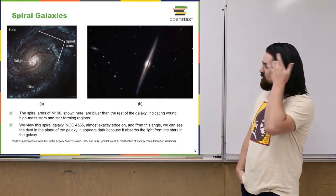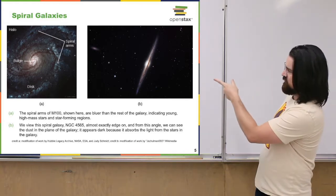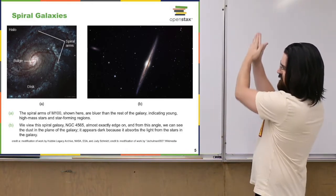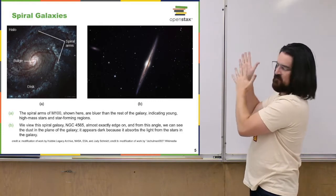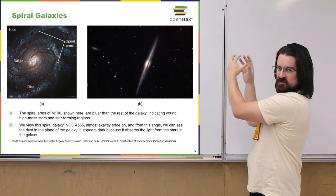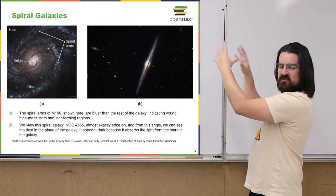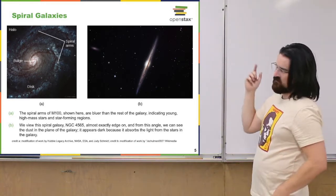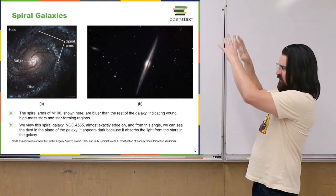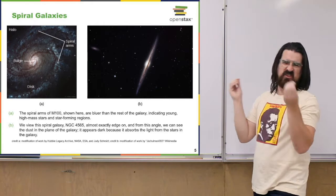Just to remind you of some features of a spiral galaxy: if you're looking at it from above, you see these spiral arms. If you look at it from the side, you see it's actually fairly flat, though towards the center there's a sort of bulge. Then there's a sphere above and below the disk called the halo, which contains mostly old stars and globular clusters. That whole sphere — the halo and the disk — is also permeated by dark matter, or what we think is dark matter.